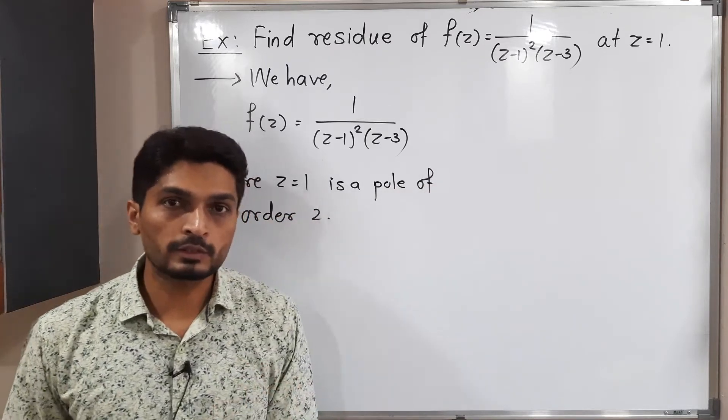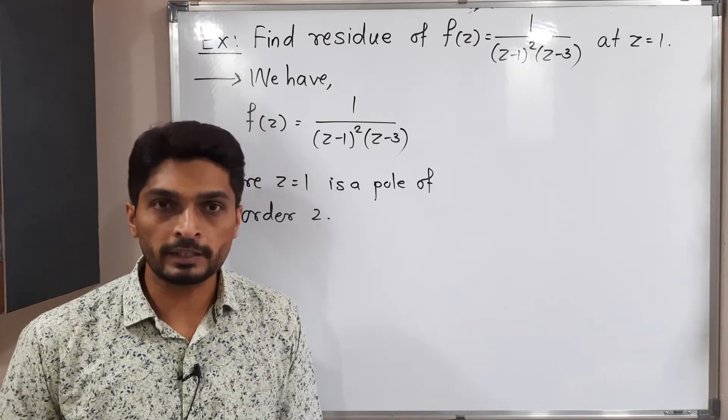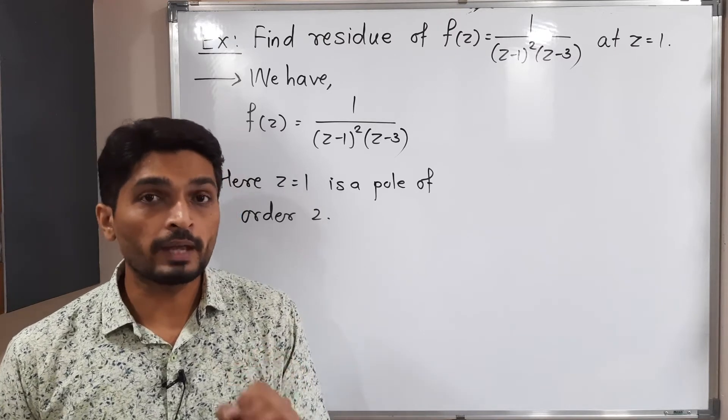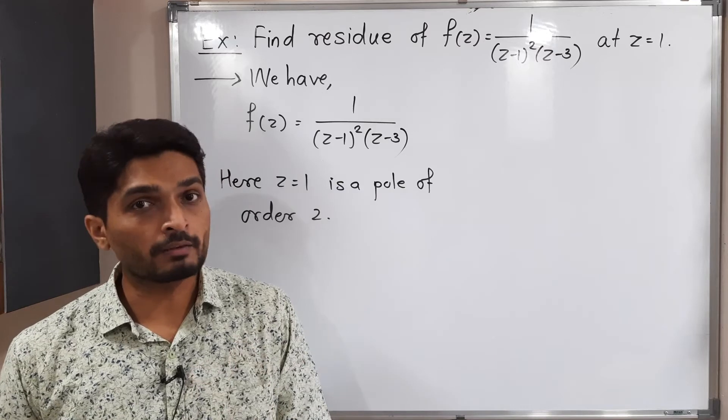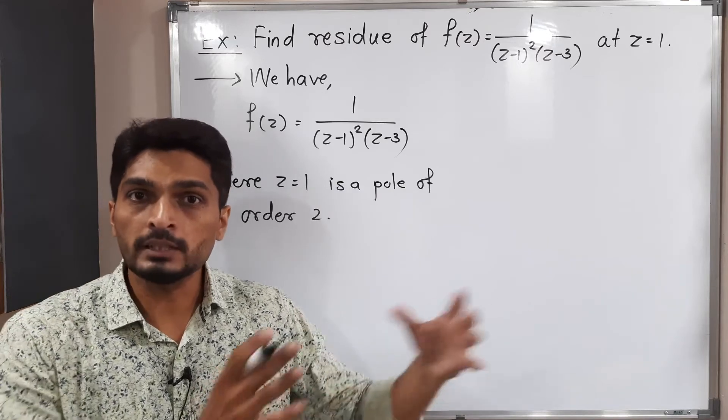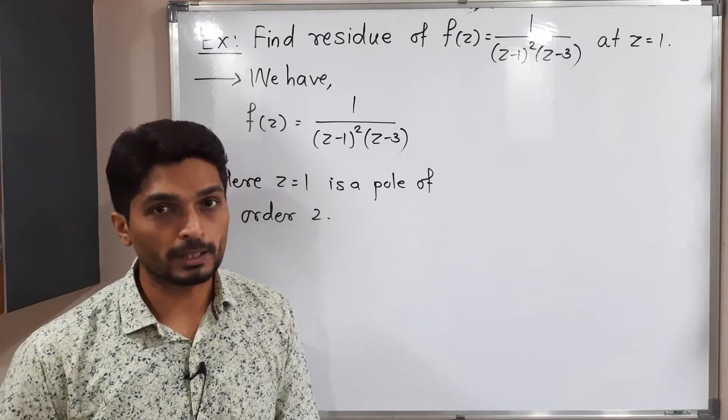We have three different methods to find residue. First is definition - that means with the help of Laurent series, we can find residue. Second, if we have a pole of order 1, then we have a formula. And if we have a pole of order m, we have a second formula. Here order is 2, so that means I should go for the second formula.